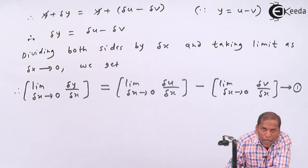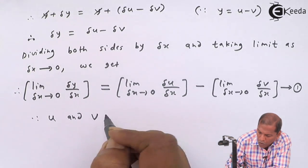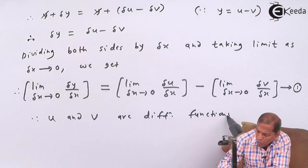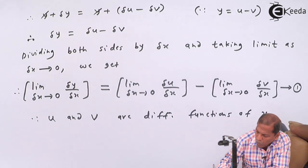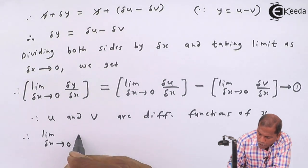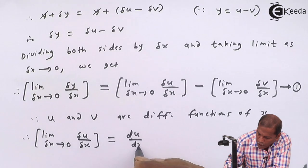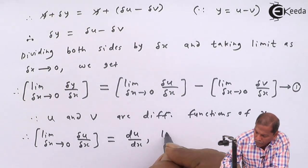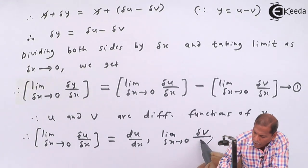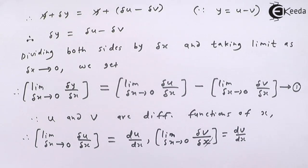Now in the theorem, given that u and v are differentiable functions of x, therefore limit δx tends to 0 of δu/δx equals du/dx, and limit δx tends to 0 of δv/δx equals dv/dx.